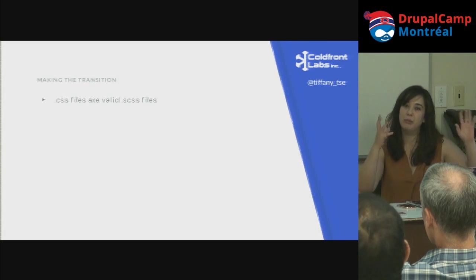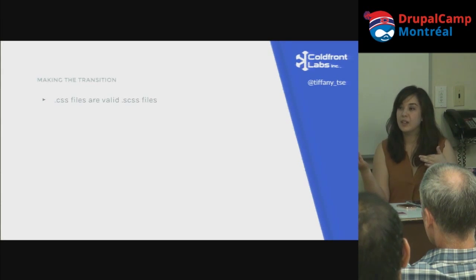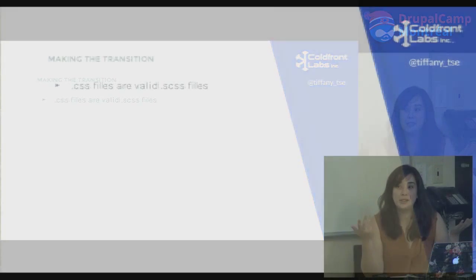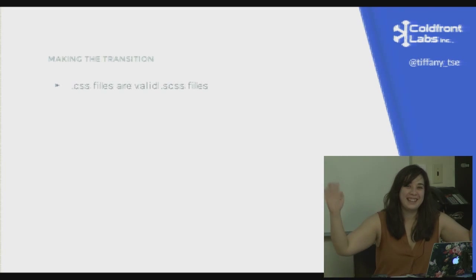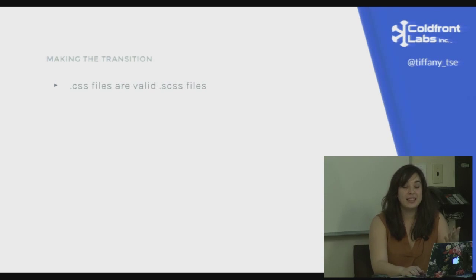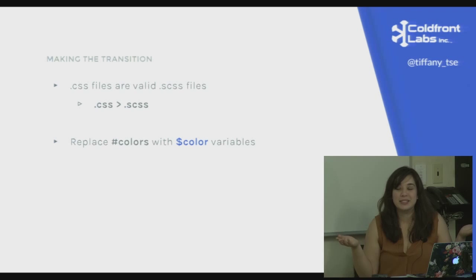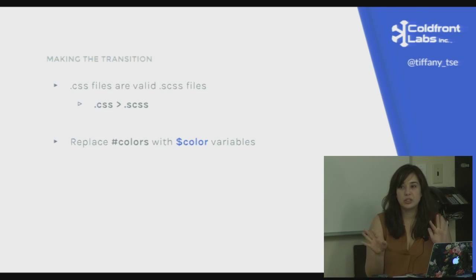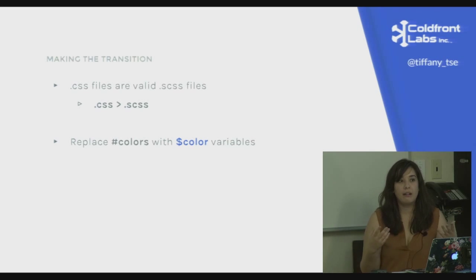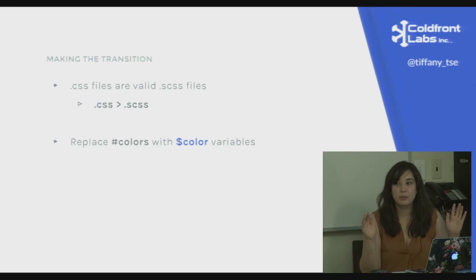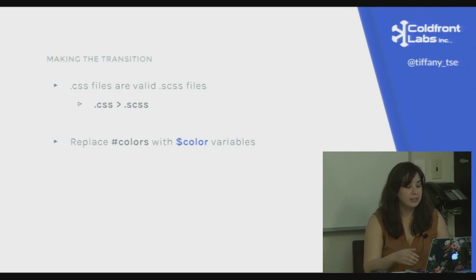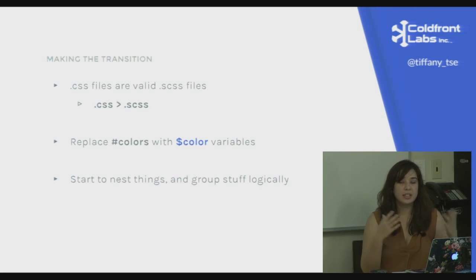How do you make the transition from regular CSS to Sass? CSS files are valid Sass files — you can just change the file extension and you have valid Sass right away. Once you've done that, replace all your colors with variables. When I first started using Sass I was intimidated, but those are the steps I took — I made Sass files, changed colors into variables, and that alone made my life so much easier.